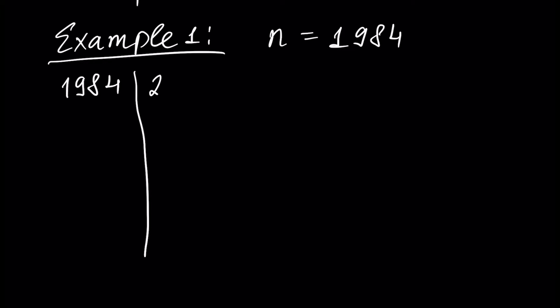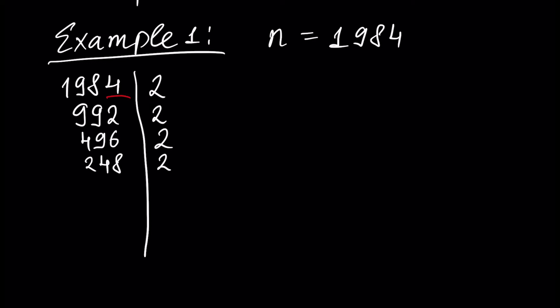We divide this number by 2, because if you watched previous tutorials, you know that the divisibility criterion for number 2 is that the last digit must be even or equal to 0. Since 4 is an even number, 1984 is divisible by 2 and the result is 992. This is also divisible by 2, giving 496. This is also divisible by 2, giving 284. Divide by 2 again and we have 124. Divisible by 2 again and we have 62.